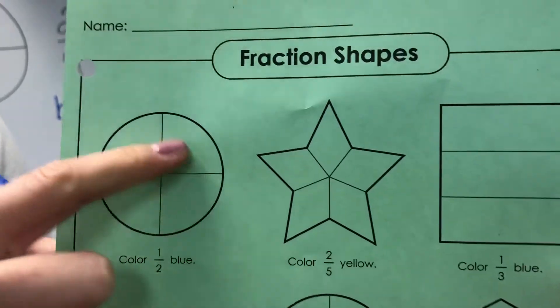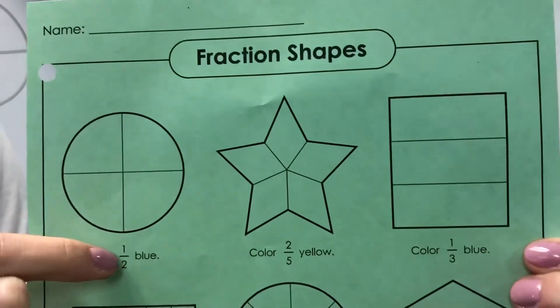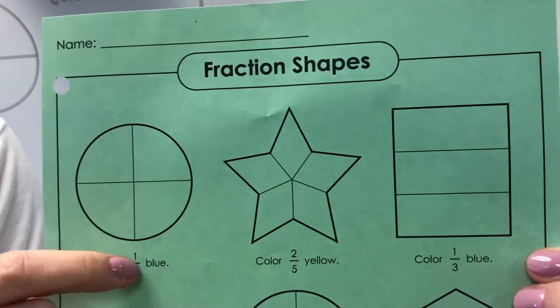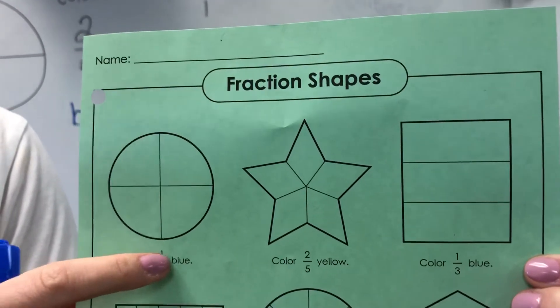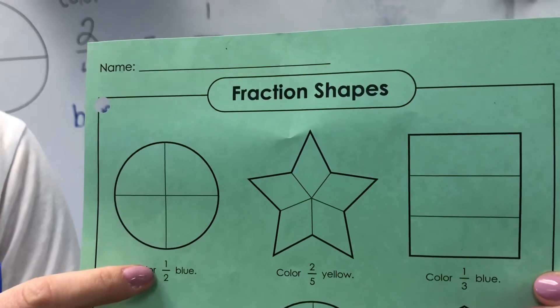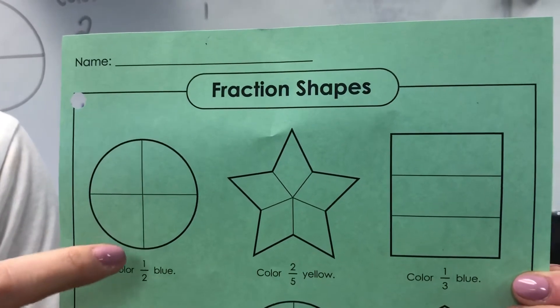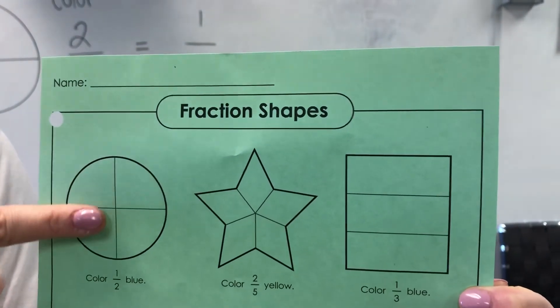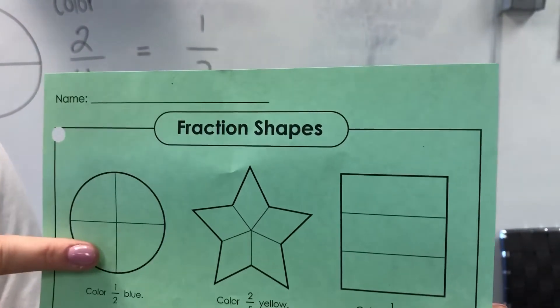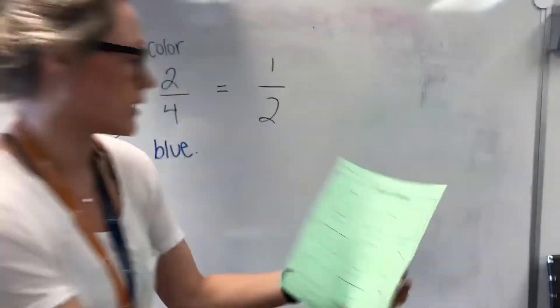There's four parts, but they're asking you to color one-half blue. So if we didn't simplify this fraction, it would be color two-fourths blue. So if we colored it, it would be coloring this half. I'm just going to show you on the board here.